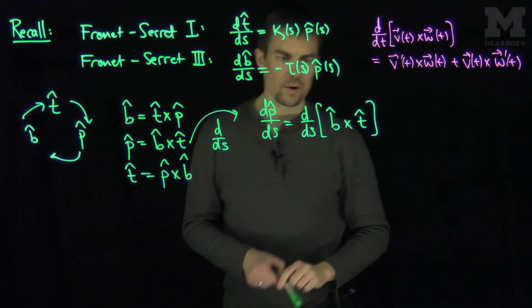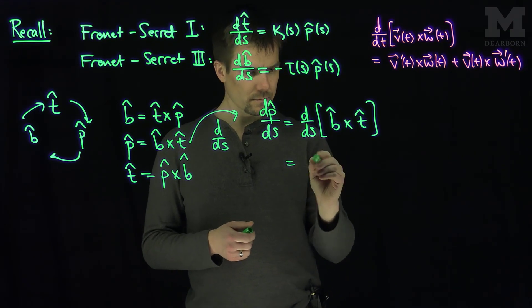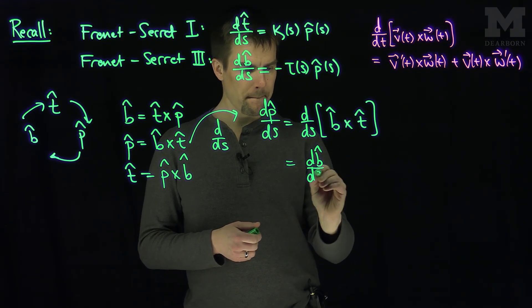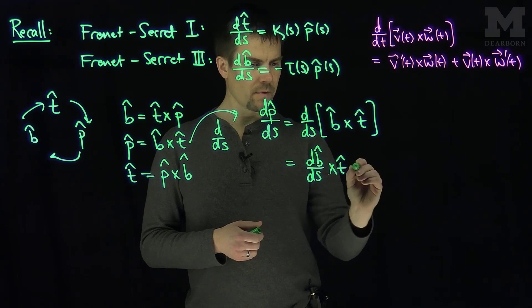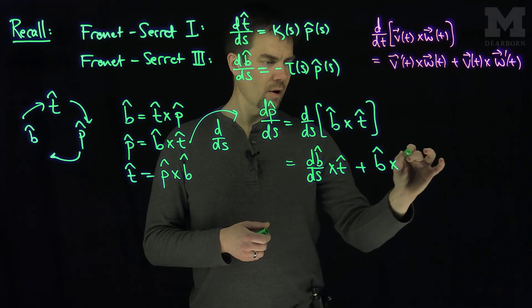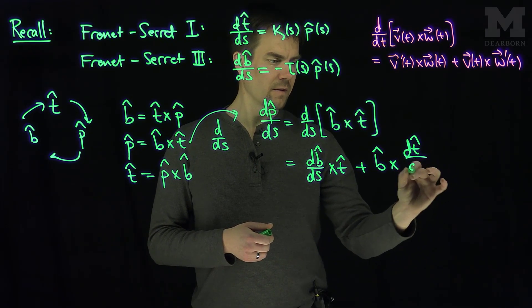So let's apply it in our situation. So we'll have db ds cross t plus b cross dt ds.